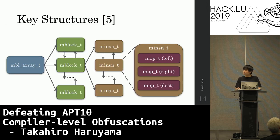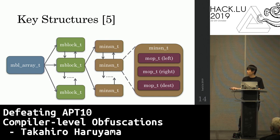There are four key structures in IDA microcode: basic block array, basic block, instruction, and the instruction structure contains two or three operand structures — left, right, and destination.